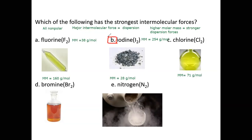When you have a large molar mass, you have more polarizability, which leads to stronger dispersion forces. Nitrogen would be the weakest one because nitrogen has the lowest molar mass.